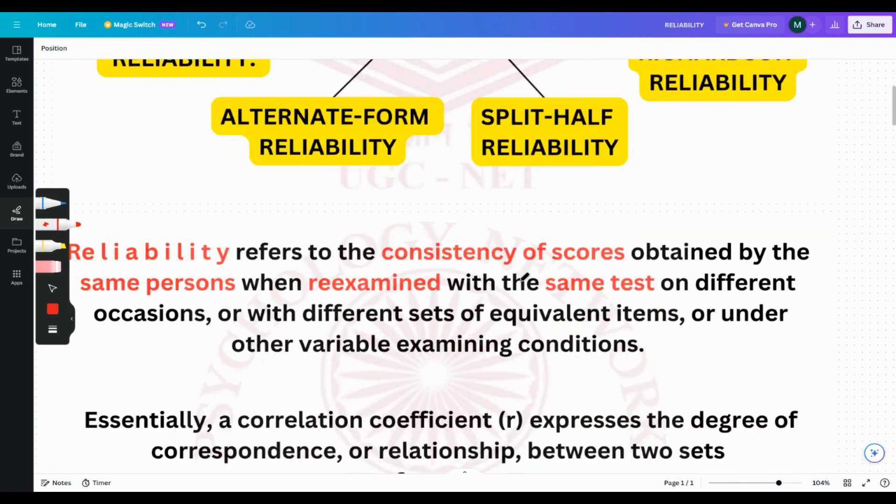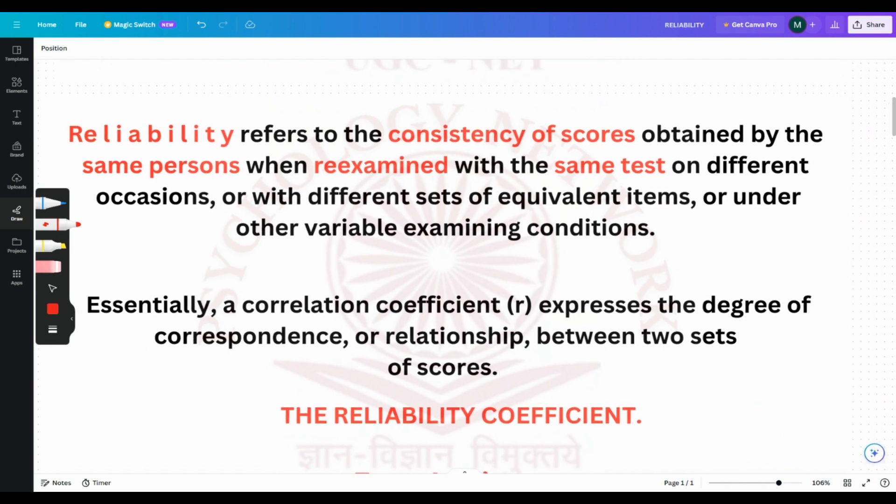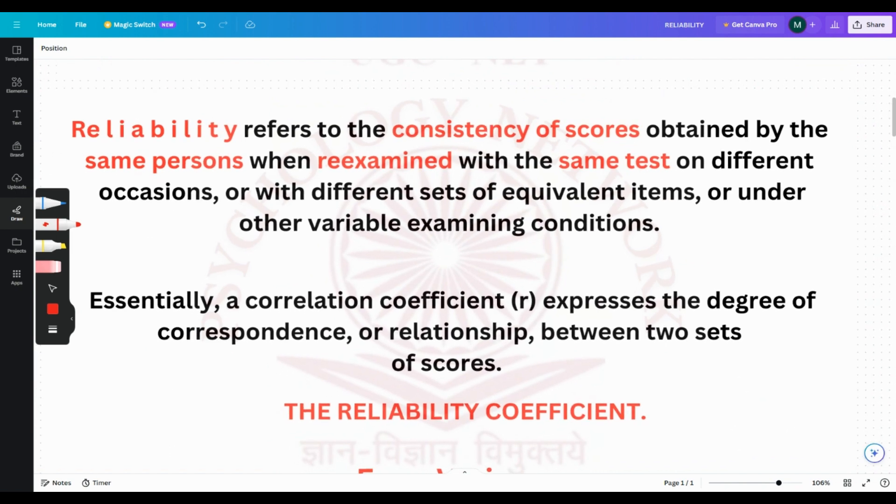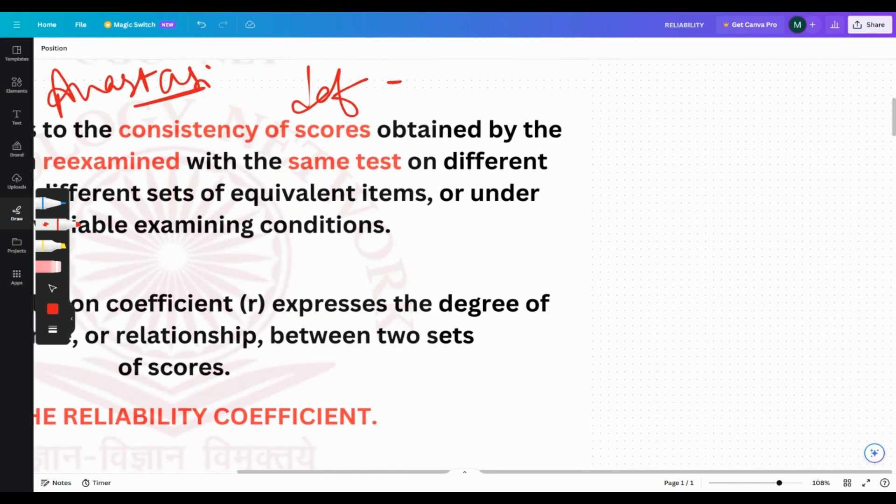Let's start with the definition of reliability. Reliability refers to the consistency of scores obtained by the same people when re-examined with the same test on different occasions or with different sets of equivalent items or under other variable examining conditions. This definition is from Anastasi. You have to write it down because even in good books, the definition is wrong.